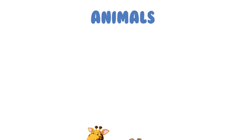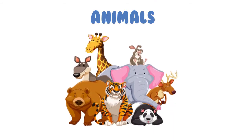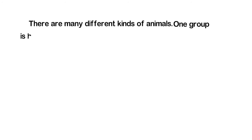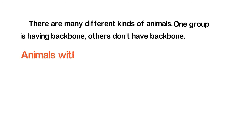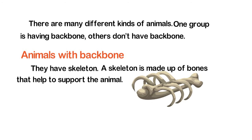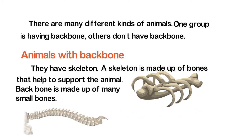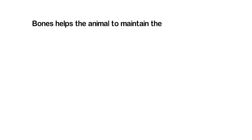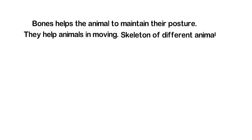There are many different kinds of animals. One group is having backbones, others don't have backbones. Animals with a backbone have a skeleton. A skeleton is made up of bones that help to support the animal. The backbone is made up of many small bones. Bones help the animal to maintain their posture and help animals in moving. Skeletons of different animals are shown below.